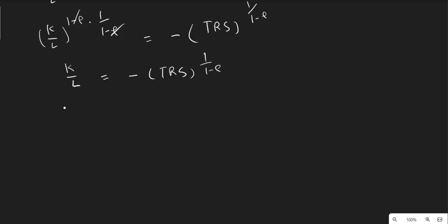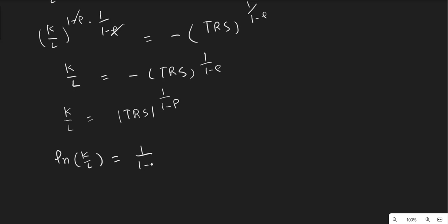Next, we take K/L in absolute form, because we will take its log and cannot take the log of a negative value — that is why we always take it in absolute form. Taking log on both sides, log of (K/L) equals — applying the power rule — one over (one minus ρ) times log of the technical rate of substitution in absolute form. We can call this equation one.